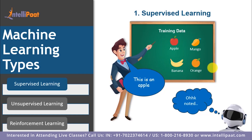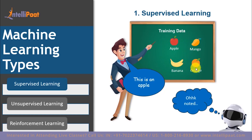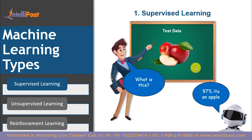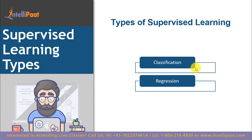Let's say we have a bunch of fruits and each fruit is tagged with a label. The machine learns that an apple looks like this, a mango looks like this, a banana looks like this, and an orange looks like this. Once the training is done, the machine is fed with new test data. Here the machine is fed with a new image of an apple and predicts that there is a 97% probability that this is an apple.